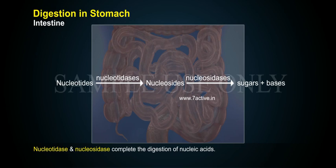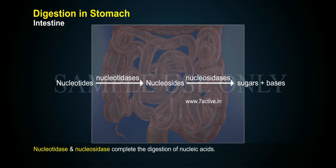Nucleotidases and nucleosidases complete the digestion of nucleic acids. Nucleotides are acted on by nucleotidases to form nucleosides, which are then acted on by nucleosidases to yield sugars plus bases.